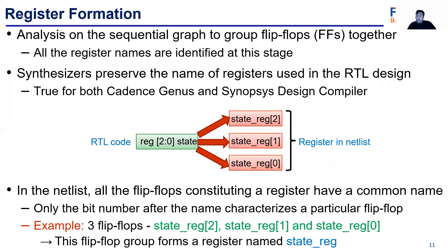Register formation is very important, and it is mainly done by performing analysis on the sequential DAG to group flip-flops together. All the register names are identified at this stage, because synthesizers preserve the name of the registers used in a certain RTL design, which is true for any sort of commercial synthesizer. For example, if a designer defines a register having a bit width of three, after synthesis it is transformed into three flip-flops having a certain naming pattern, and all of these flip-flops are part of a single register named state underscore reg.